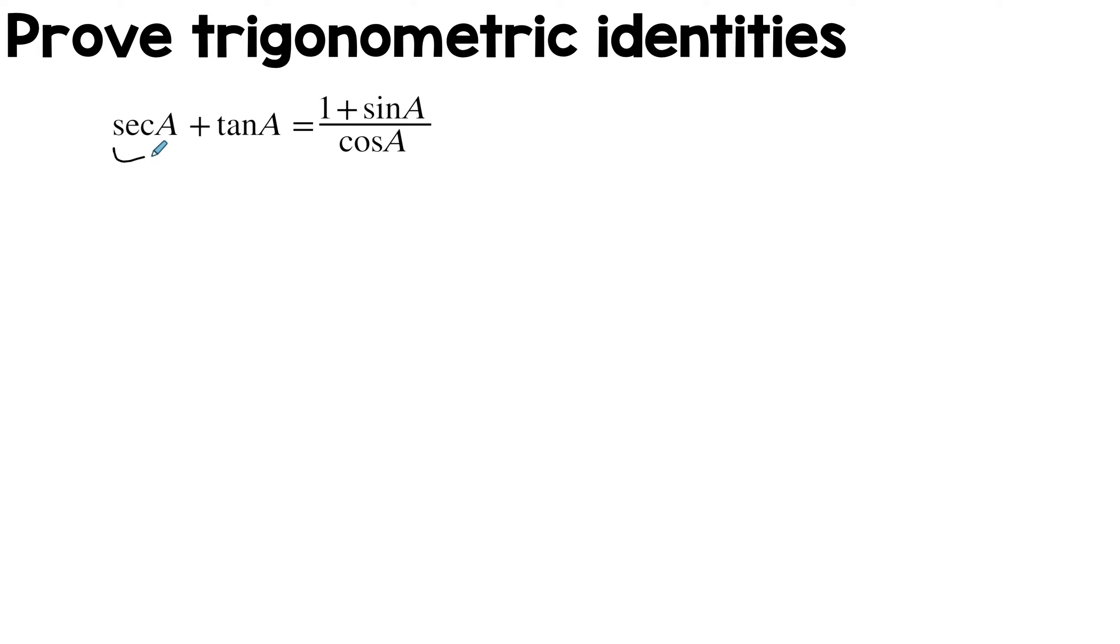So what I'm going to do is use this side and show that it's equal to this. I know that secant A is equal to one over cos A and tan A is equal to sine A over cos A. I think you can see where this is going. They have the same denominator and the numerator is going to be this. And that's it. We're done. Quite nice and easy.